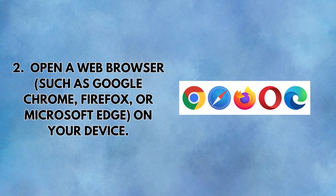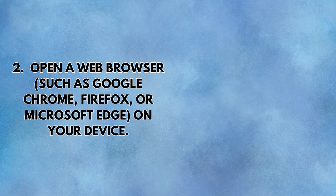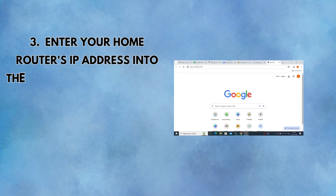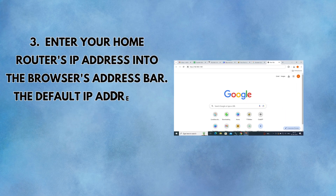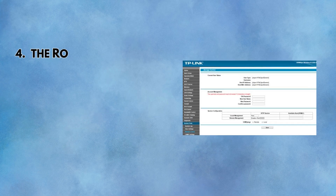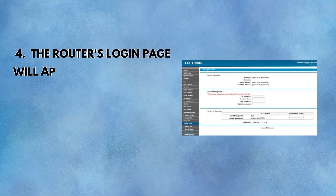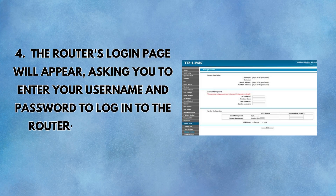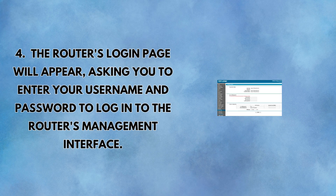Open Firefox or Microsoft Edge on your device. Enter your home router's IP address into the browser's address bar. The default IP address can be found in the manual or on the router body. The router's login page will appear, asking you to enter your username and password to access the management interface.